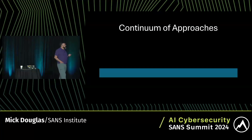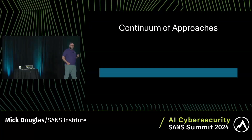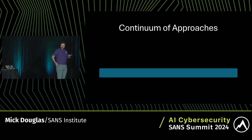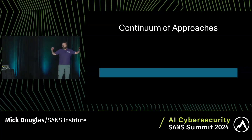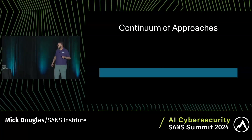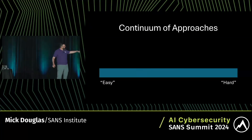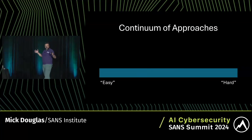I think of data science, specifically within the information security space, as a continuum of options that we have. If you think about all the methods of analysis, there's a gradient from easy to hard — and 'easy' and 'hard' are in quotes because that's a bit judgy. What's easy for me might be hard for you and vice versa.